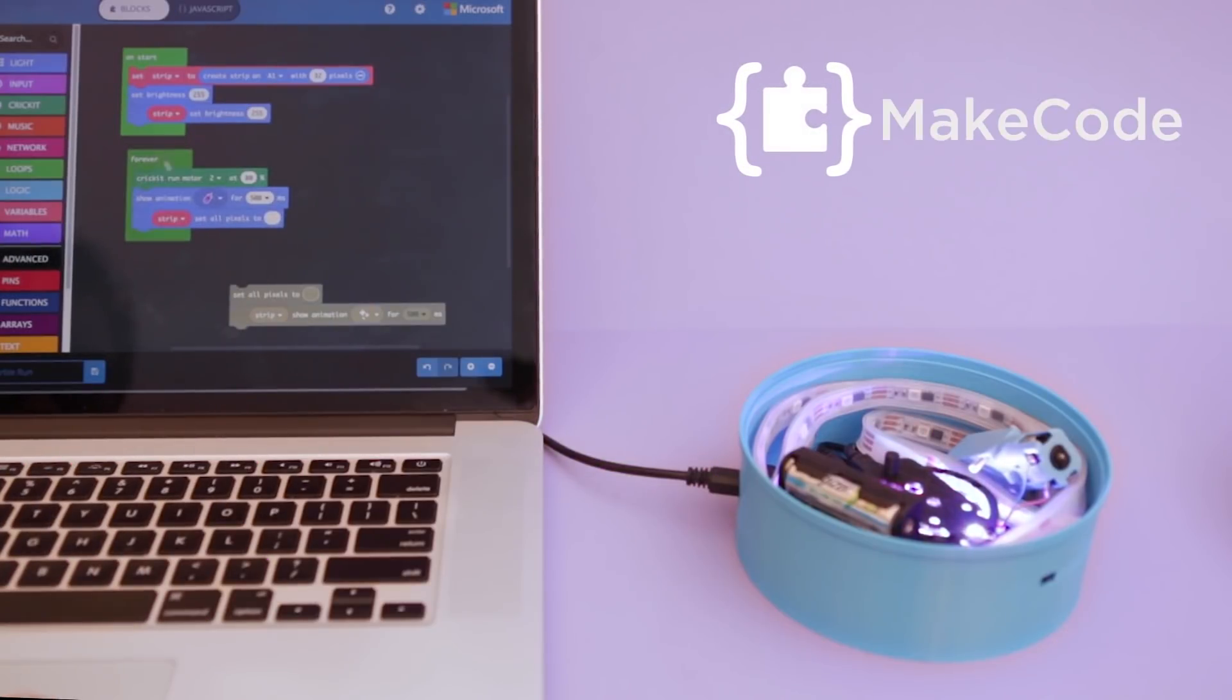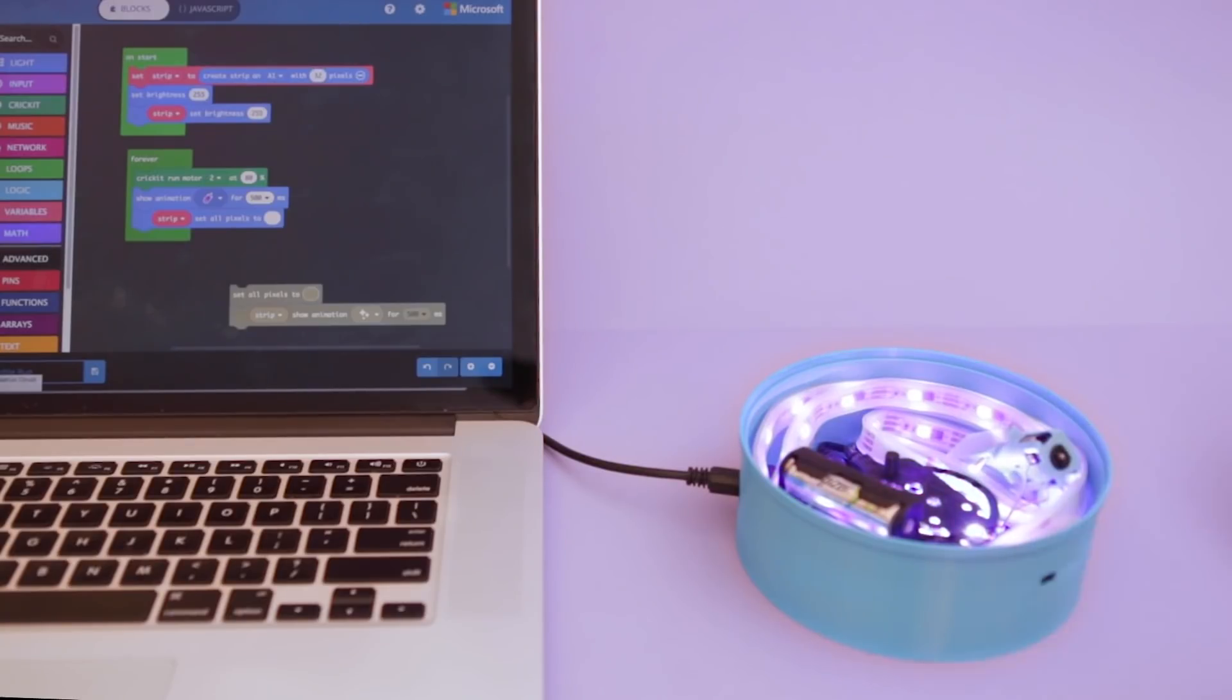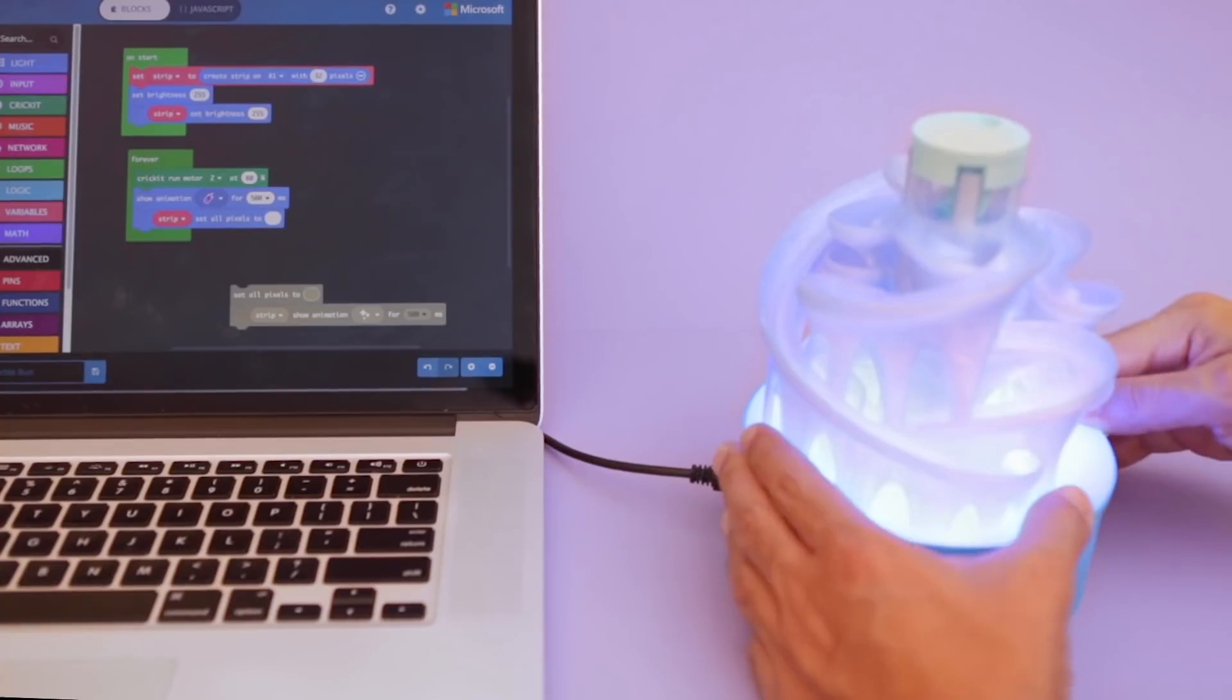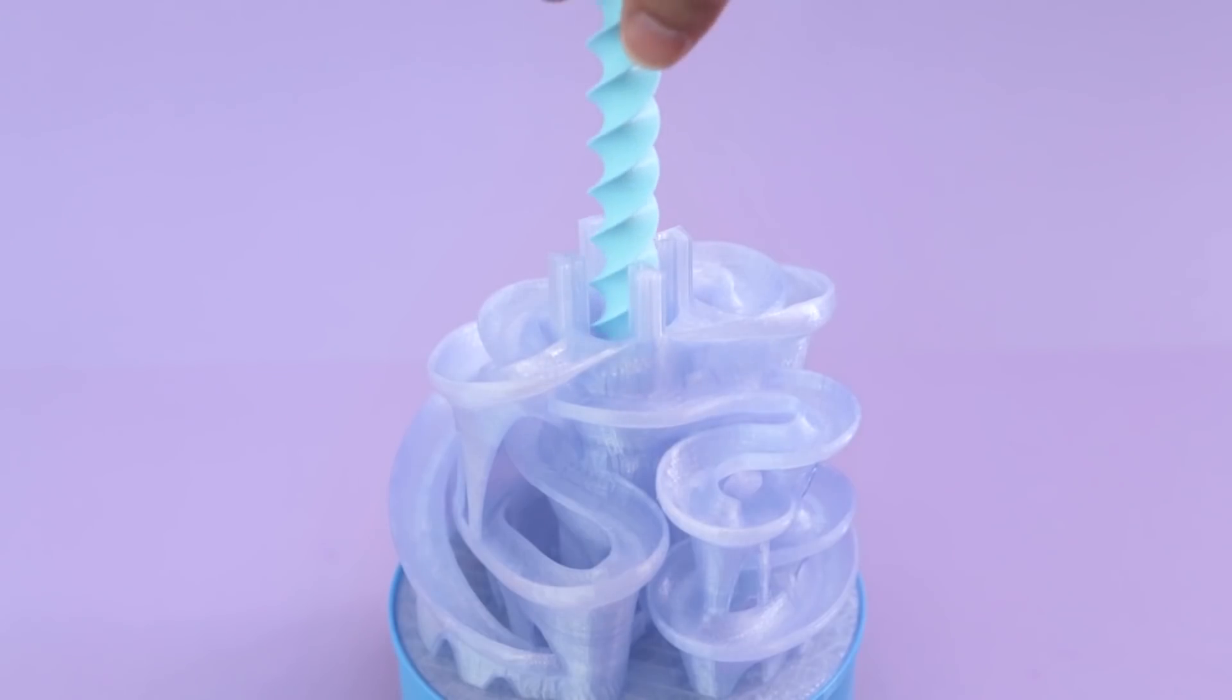We used MakeCode to program the Adafruit Cricut in circuit playground express. The interface makes it easy to program hardware using code blocks. We think this project is a good starting point because the Cricut is capable of so much more. Check out our Cricut playlist to see more projects and ideas.